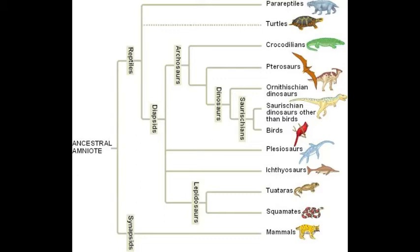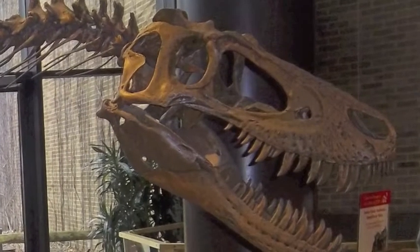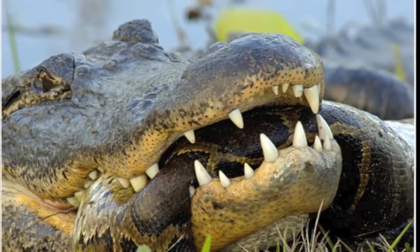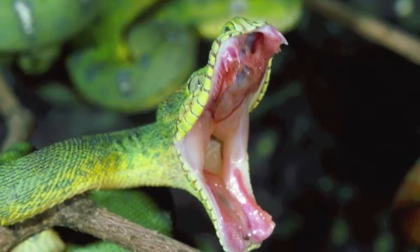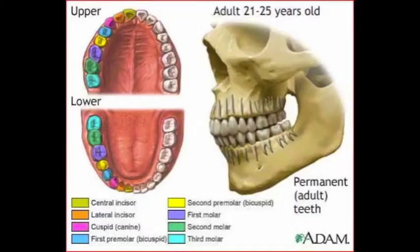The sauropsids, more commonly known as the reptiles, are further divided into the parareptiles, the turtles, and the diapsids. The synapsids and the diapsids are differentiated by the number of fenestrae, or windows, in their skulls. Diapsids have two openings on either side of their skull, allowing for the contraction of strong jaw muscles and a wider opening of the mouth. The synapsids, with only one fenestra, developed incisors and molars to cope with their less developed jaw musculature.